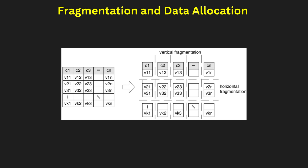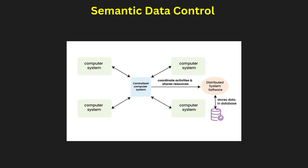Semantic data control ensures that data in a distributed DBMS follows security, integrity, and consistency rules. It includes view management, data security, and semantic integrity control. View management allows users to access specific data without exposing the entire database, enhancing security and efficiency. Data security mechanisms include encryption, access control, and authentication to protect sensitive information. Semantic integrity control ensures that data relationships remain valid across distributed sites, enforcing constraints like primary key, foreign key, and referential integrity. Without proper semantic data control, data inconsistency, security breaches, and unauthorized modifications can occur.